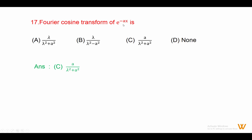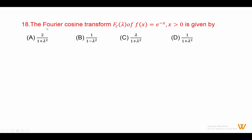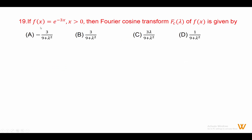Eighteen: the Fourier cosine transform Fc(lambda) of fx equals e raised to minus x for x positive. We know the formula Fc of e raised to minus ax is a upon lambda squared plus a squared. Therefore Fc of e raised to minus x is 1 upon lambda squared plus 1. Answer is option D.